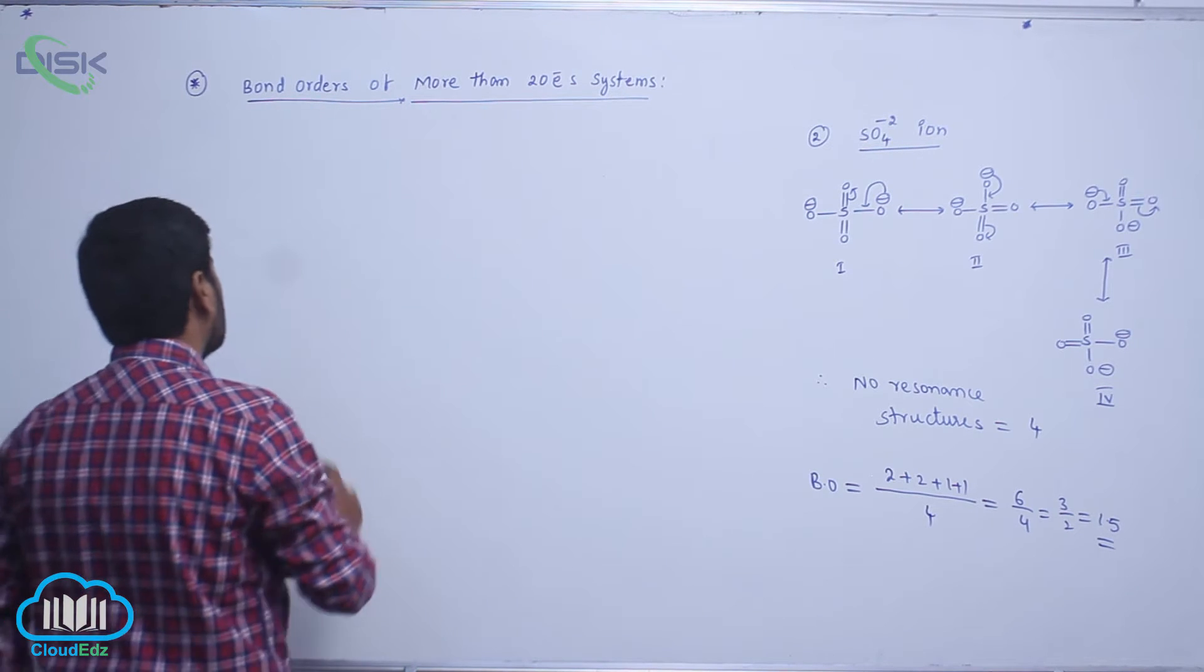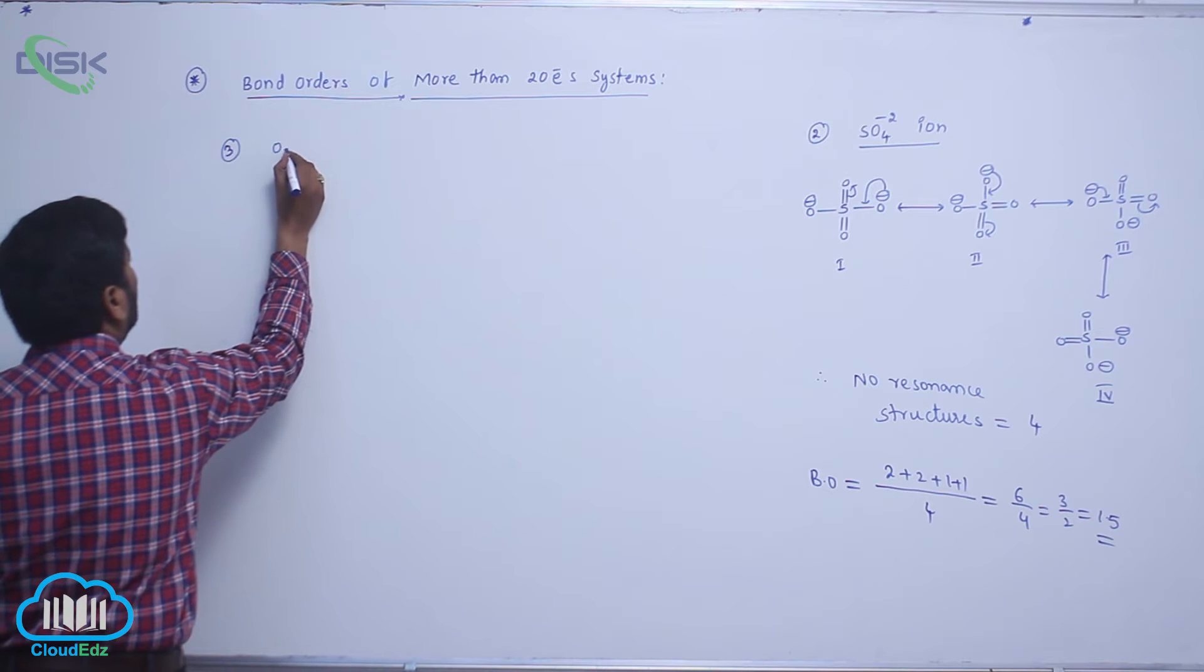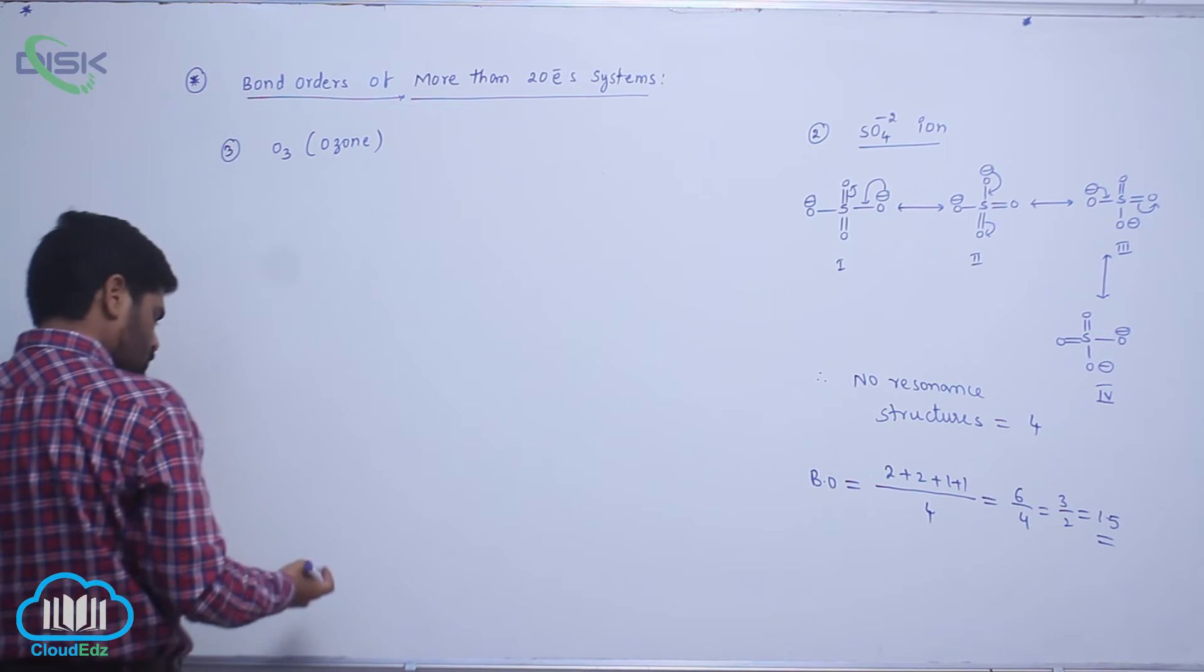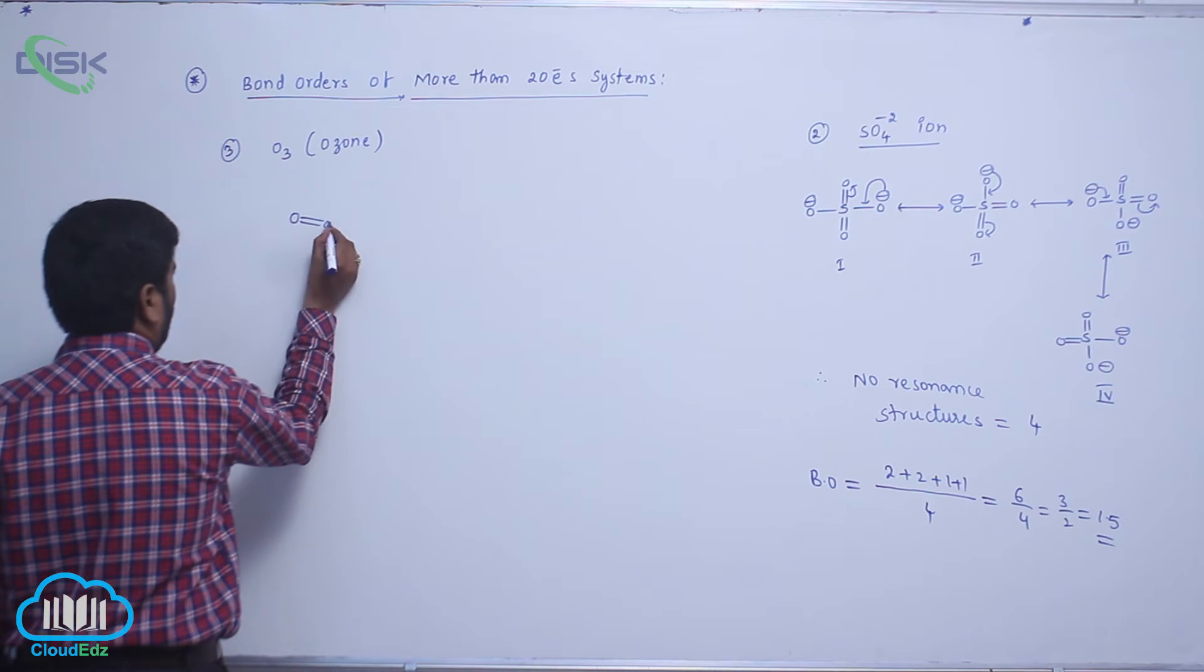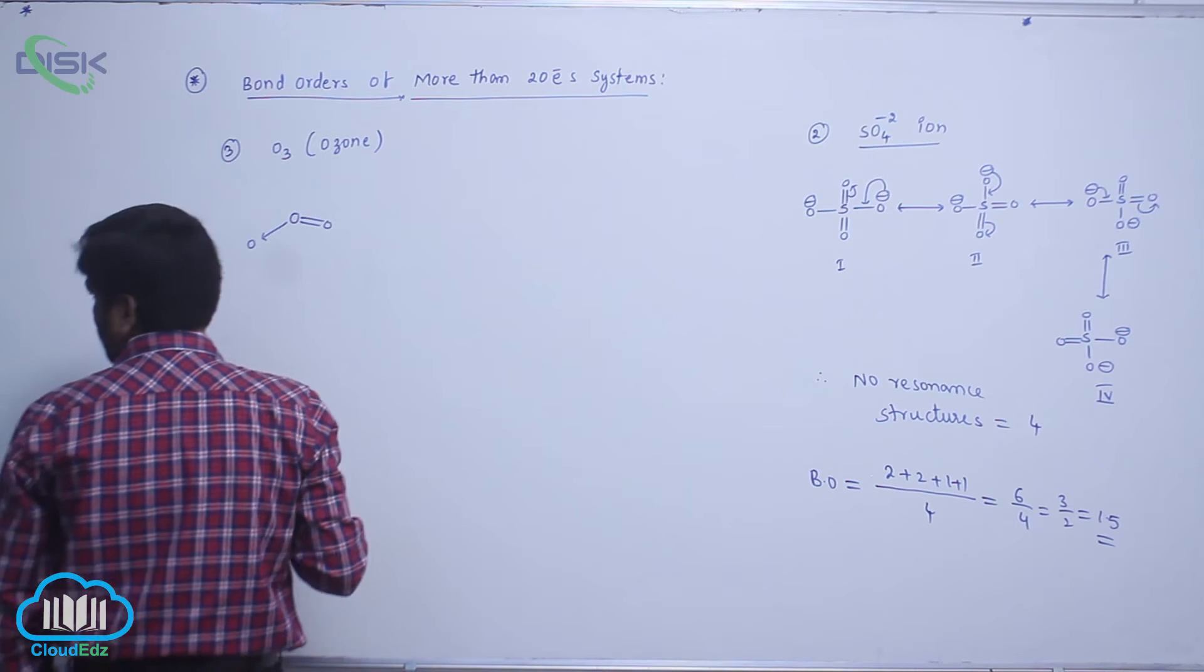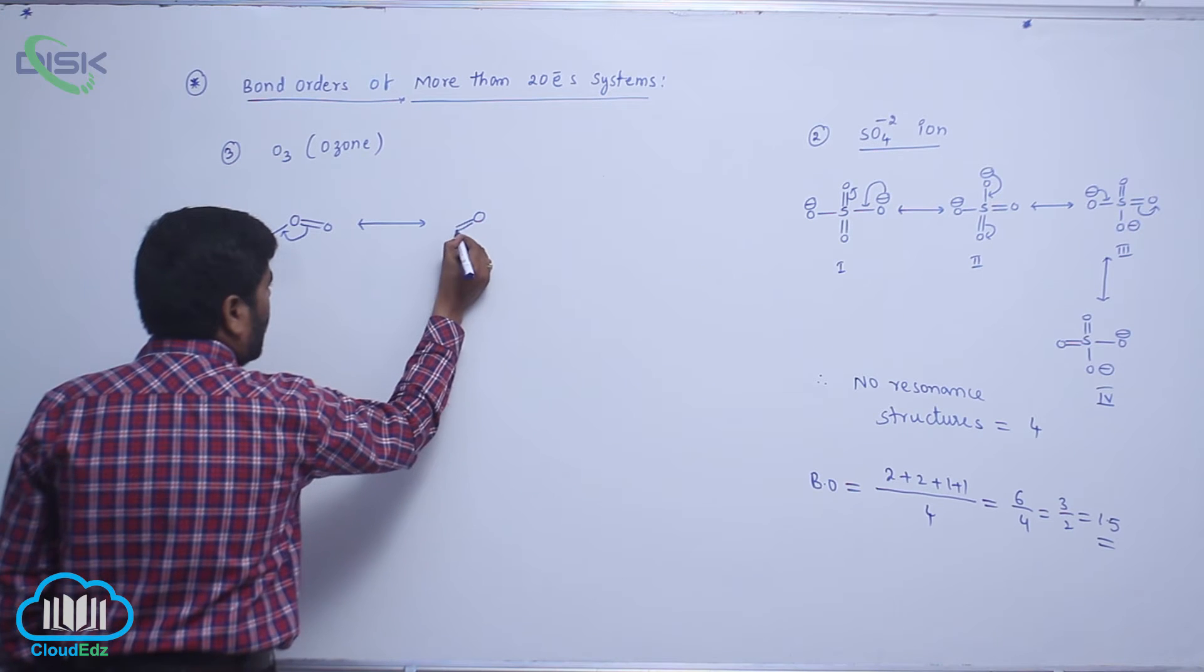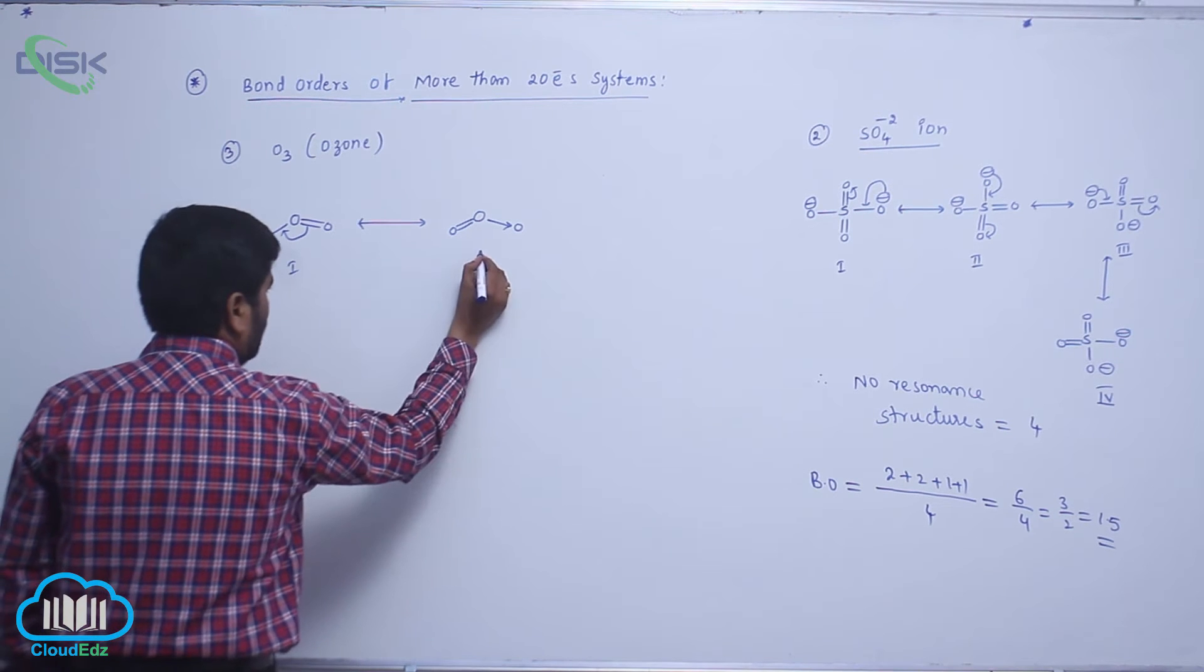O3 molecule, this is ozone. The number of resonance structures here: now this bond shifted here, it converts into a double bond with oxygen, then like this. This is the first one, here is the second.